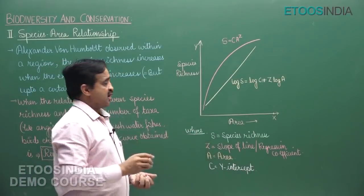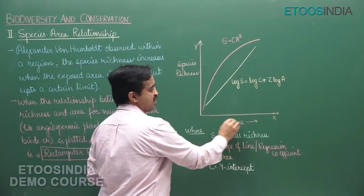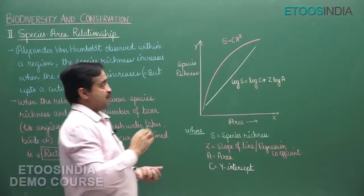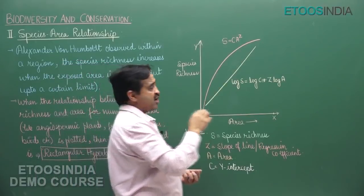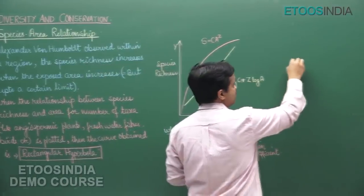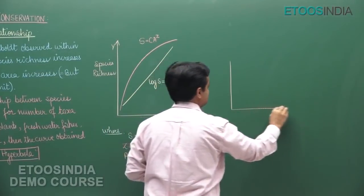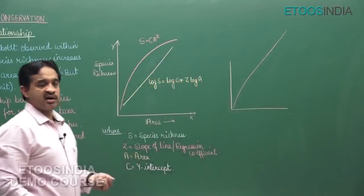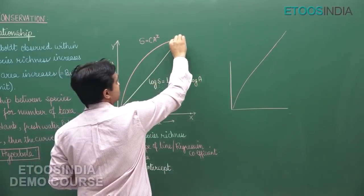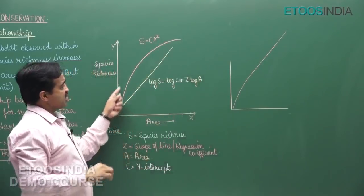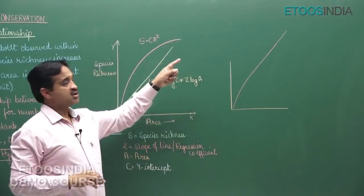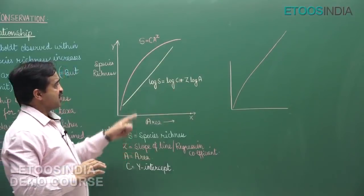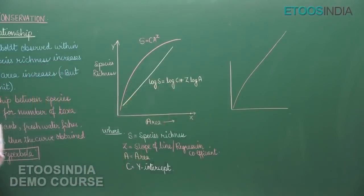This means that as we increase the area, species richness increases. But if it increased infinitely, the curve would keep going straight up. Here, the curve bends because it increases only up to a limit and then becomes constant, giving us this equation.